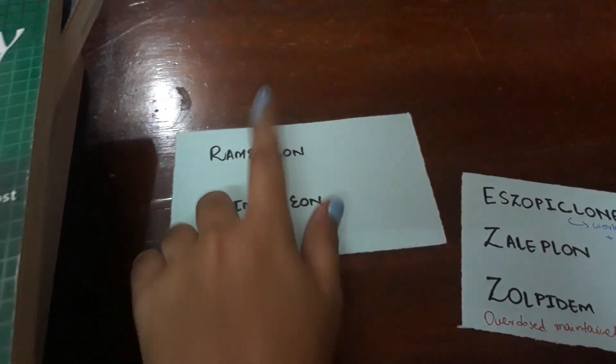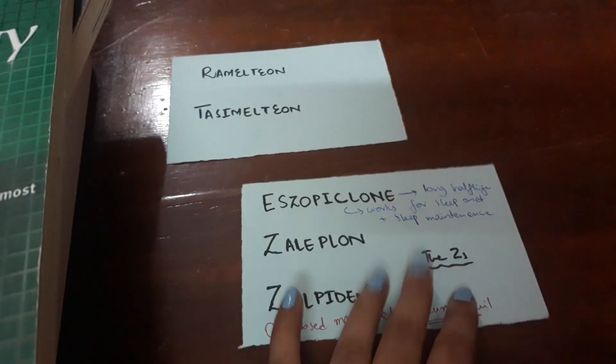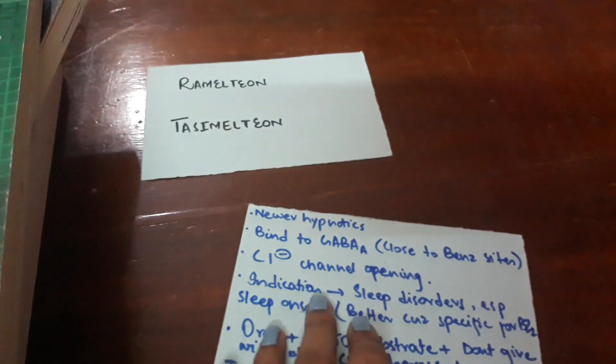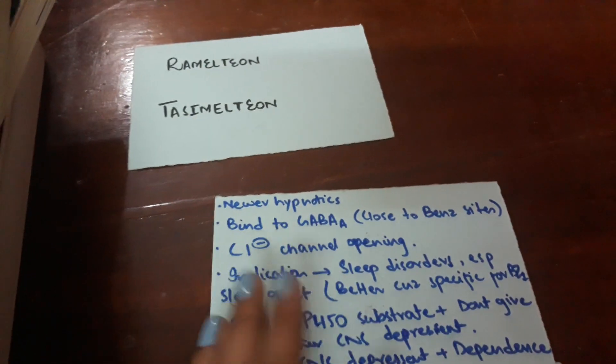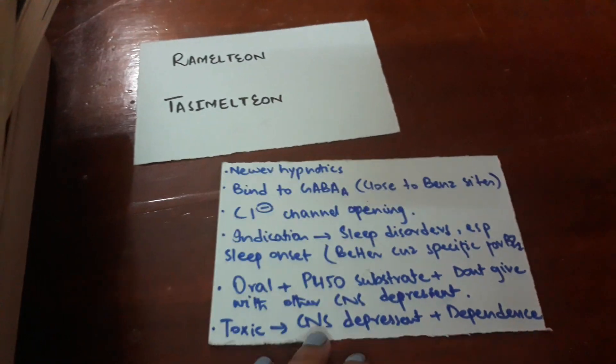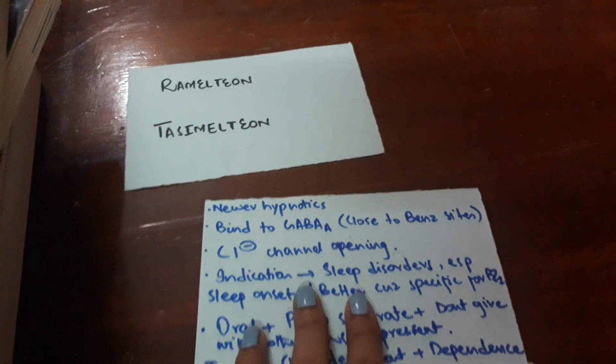For example, two drugs in one group — the melatonin receptor agonists. Then we have the BZ1 receptor drugs: eszopiclone, zaleplon, and zolpidem, which act on GABA receptors — the chloride channel-opening GABA receptors — and are specific drugs for sleep disorders. So I have the drug names on one side and all the properties on the other.